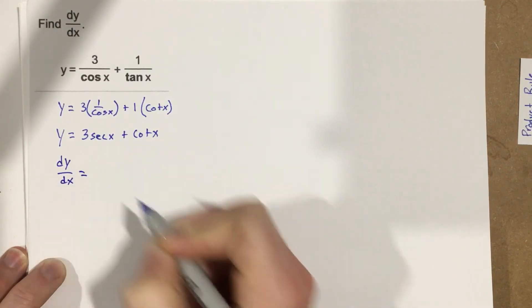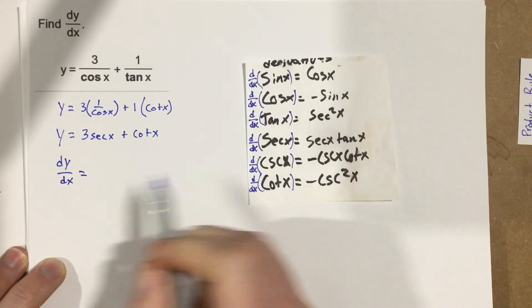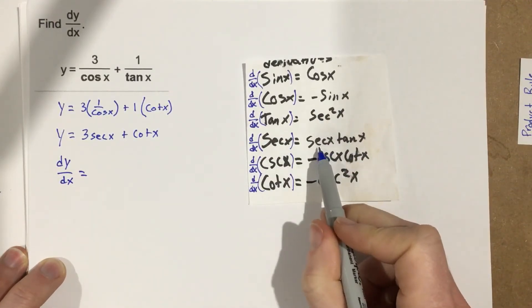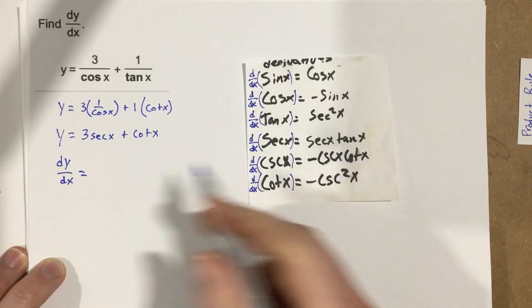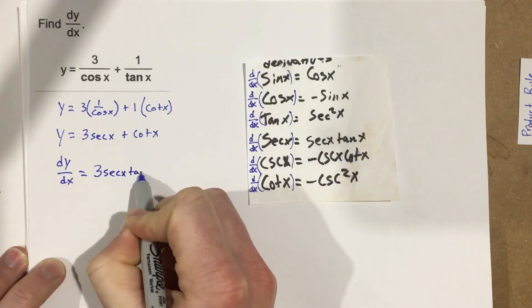dy over dx is going to equal, let's pull out the derivatives for the trig functions. We know that the derivative of secant x is secant x tangent x. So, this is 3 secant x tangent x.